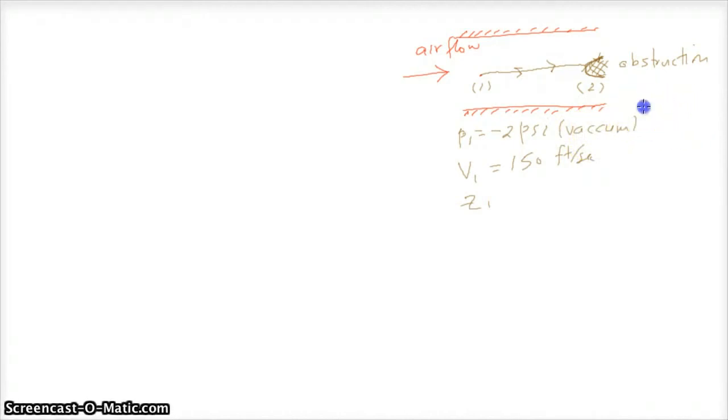Similarly, at the second cross-section, P2 and V2 and Z2 are the corresponding pressure, velocity, and elevation. We know that since it's a horizontal streamline, Z2 will be equal to Z1. And we know that because it's a stagnation point, the fluid comes to rest. So V2 is equal to zero, and P2 is the stagnation pressure that we need to determine.